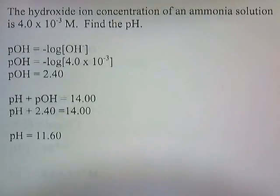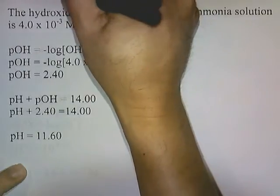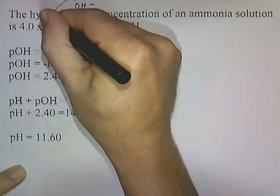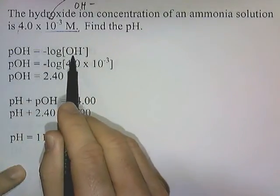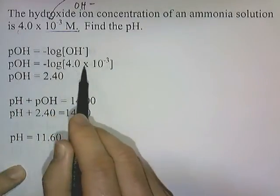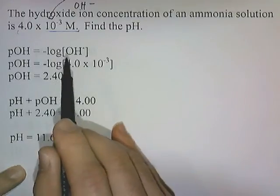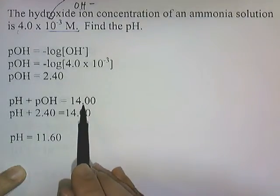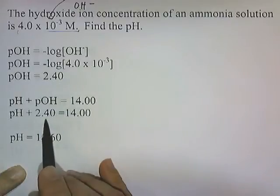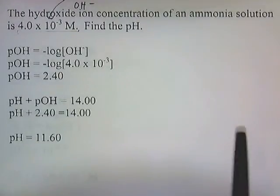The hydroxide ion concentration of an ammonia solution is 4 times 10 to the negative third molar. Find the pH. Since we have the concentration of OH⁻, we can use it to find the pOH. pOH equals negative log of the concentration of hydroxide; plugging in 4 times 10 to the negative third gives 2.40. Then using pH plus pOH equals 14, pH plus 2.40 equals 14, so pH equals 11.60. That's one way to find the pH if you're given the concentration of hydroxide.